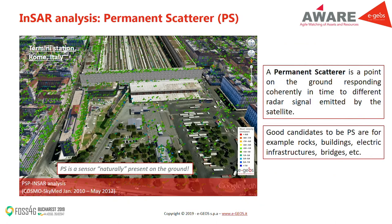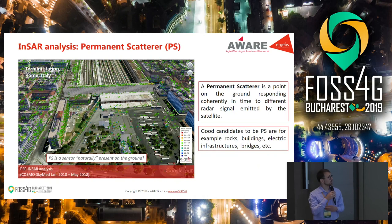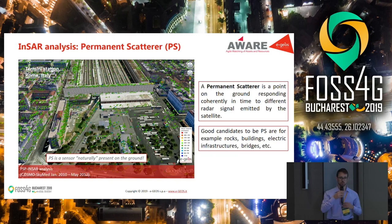Our data comes principally from InSAR analysis. InSAR analysis uses natural sensors on the ground called permanent scatterers. A permanent scatterer is a point on the ground responding coherently in time to different radar signals emitted by radar satellites. Good candidates to be permanent scatterers are, for example, rock buildings, other infrastructure, and bridges.